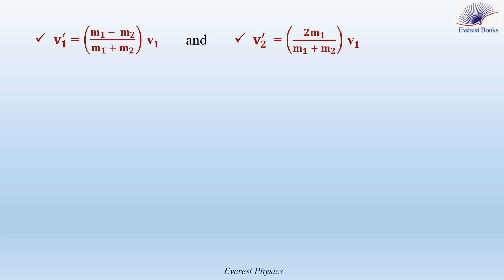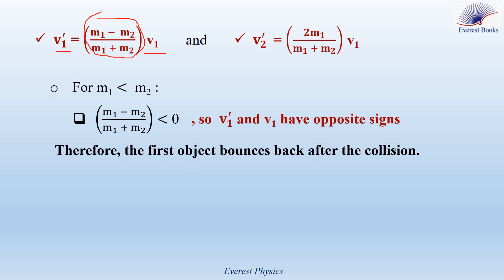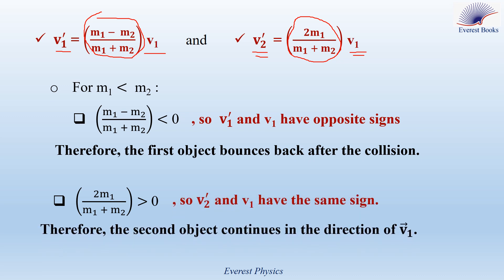Recall that we are studying two colliding objects with one initially stationary. Now, another particular case: what if M1 < M2? The term (M1 − M2)/(M1 + M2) becomes negative, which means V1' and V1 have opposite signs — the first object bounces back after the collision. The term 2·M1/(M1 + M2) is always positive, so V2' has the same sign as V1 — the second object continues in the direction of V1.